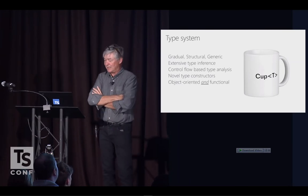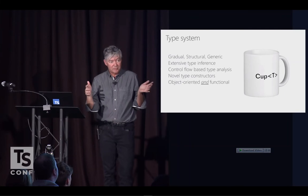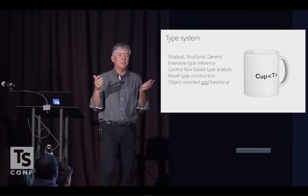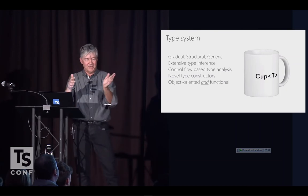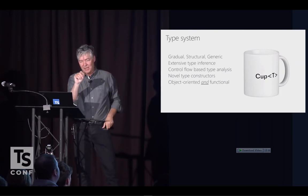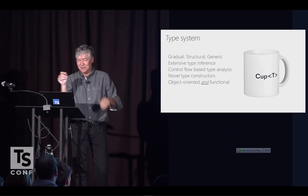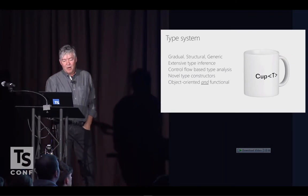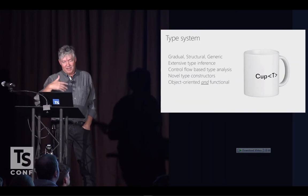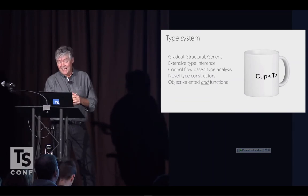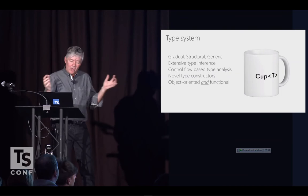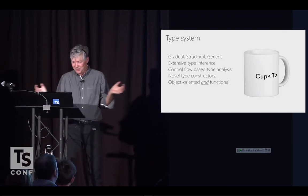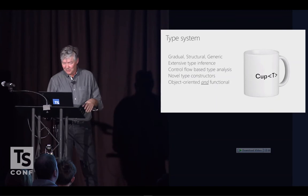We have extensive type inference, and we do control flow based type analysis — which you know from non-nullable types — and the ability to understand how flow of control narrows types in if-blocks, for example. We have a bunch of novel type constructors. Interestingly, we're both object-oriented and functional, which typically is sort of a religious either-or.